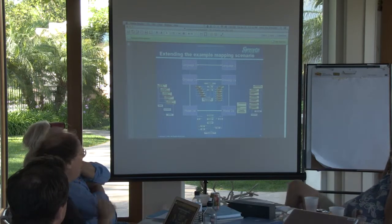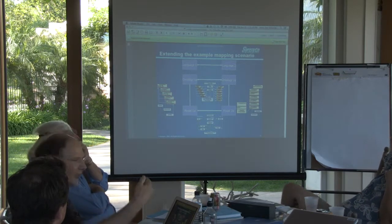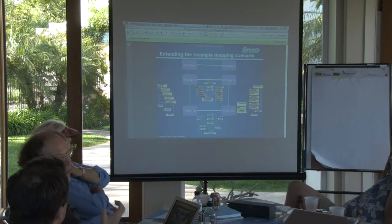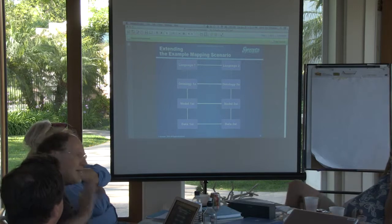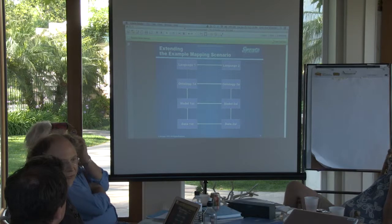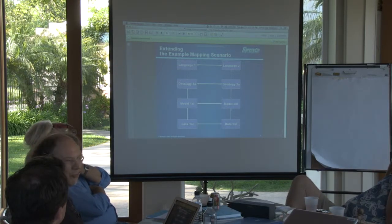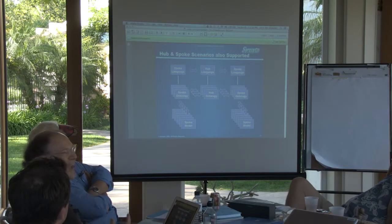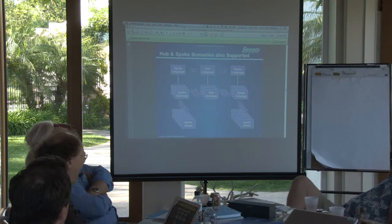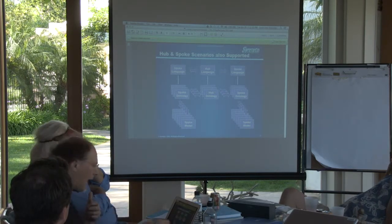Slide 35: the approach that worked across two meta-levels — language definition and ontology — can be extended down to support a model layer whose elements conform to an ontology defined in a language, going up the meta-levels. Slide 36: we can push it all the way down. For those familiar with MOF — the Meta Object Facility of the OMG, on which UML is based — this covers the entire meta-modeling hierarchy from M3 at the top to M0 at the bottom. Slide 37: the approach is extendable, at least to hub-and-spoke models, where we can have hub languages and hub ontologies, and map between them without requiring humans.